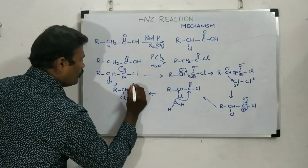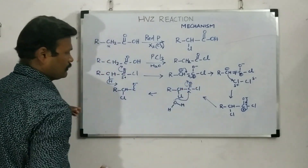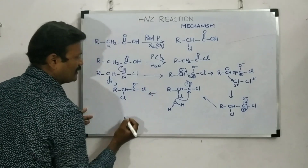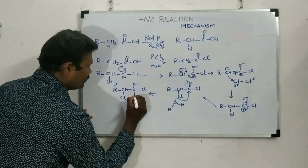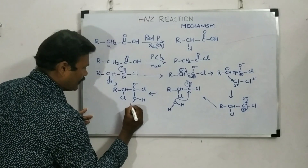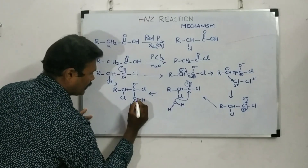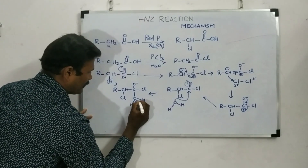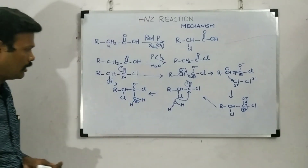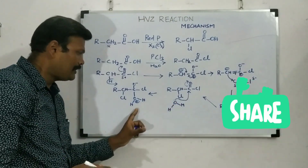The lone pair of the water oxygen attacks the positive carbonyl carbon, forming a bond to give C=O minus. This causes electron rearrangement: one bond shifts accordingly. This gives an intermediate with -C(Cl)(=O)(OH₂⁺). Because of the donation of electrons, the oxygen attains a positive charge.